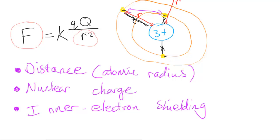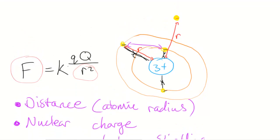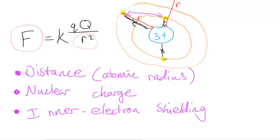So those are the three factors which affect the magnitude of the ionization energy required to ionize a particular atom or molecule. I hope this video was helpful and I'll see you in the next video.